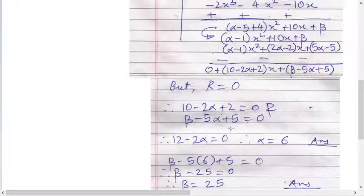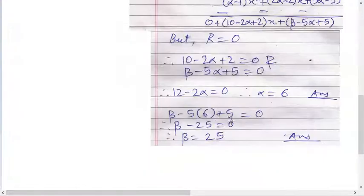Solve this, so it becomes 12 minus 2 alpha equals to 0. Take 2 alpha on this side, and then alpha equals to 6, one answer.